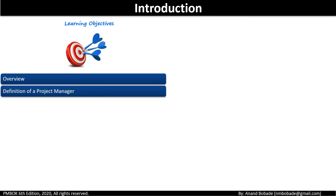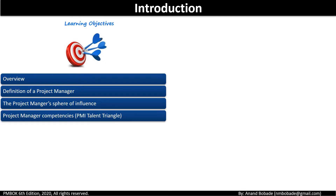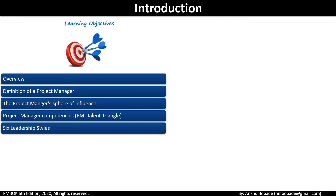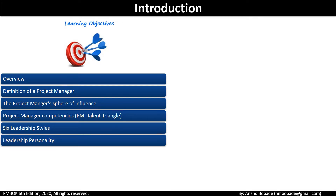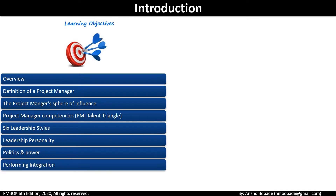The learning objectives of this chapter are: we will start with you as a project manager, the definition of project manager, project manager's sphere of influence, how you influence people where you work, project manager's competencies including the PMI talent triangle, what competencies a PM needs — management and technical competencies. You will also learn about six different leadership styles, leadership personality, politics and how that affects us as a project manager, and how a project manager balances various pieces of the puzzle and performs integration, followed by a quick review.